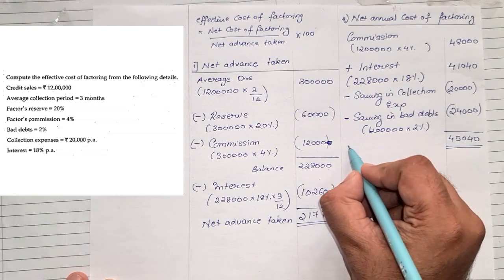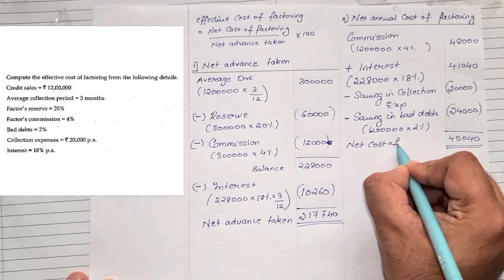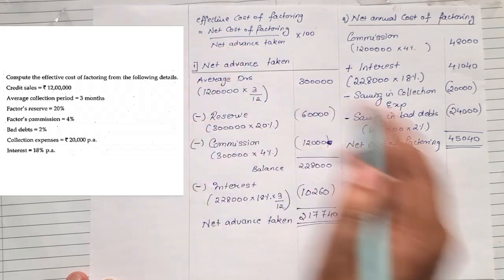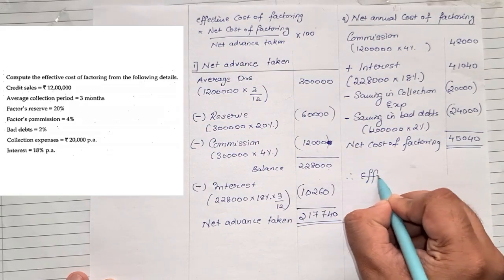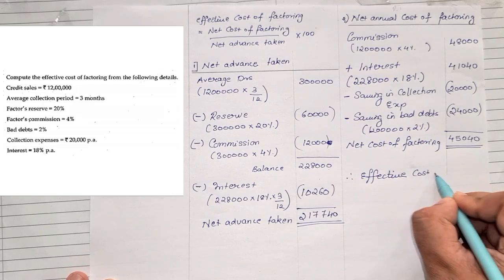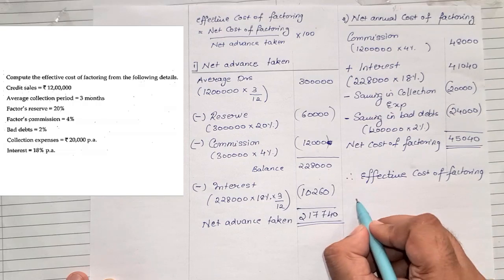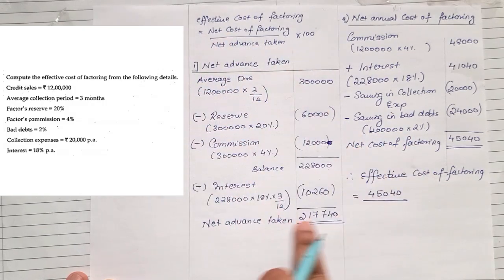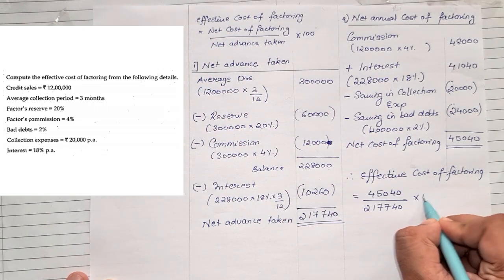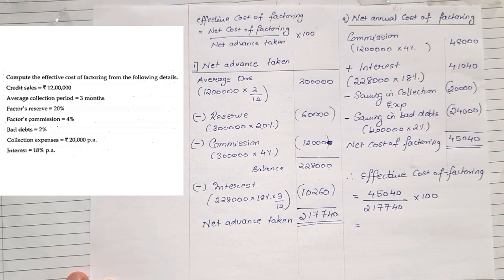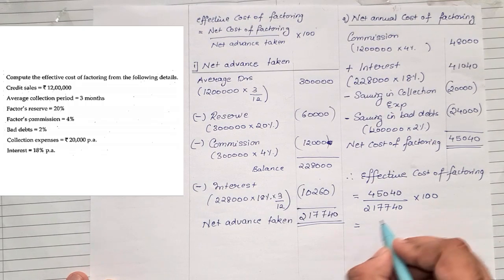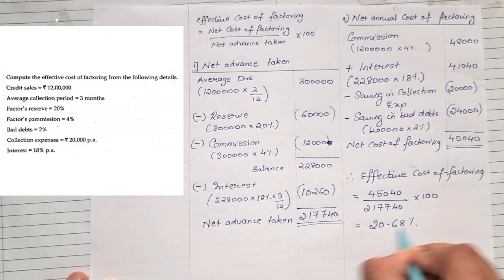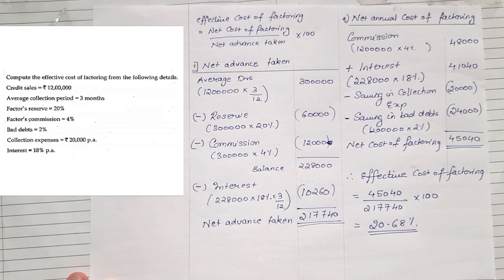That is our net cost of factoring. Now I have the numerator and the denominator, so finally: effective cost of factoring equals 45,040 upon 2,17,740 into 100. Dividing and multiplying, we get a final answer of 20%. That's our effective cost of factoring.